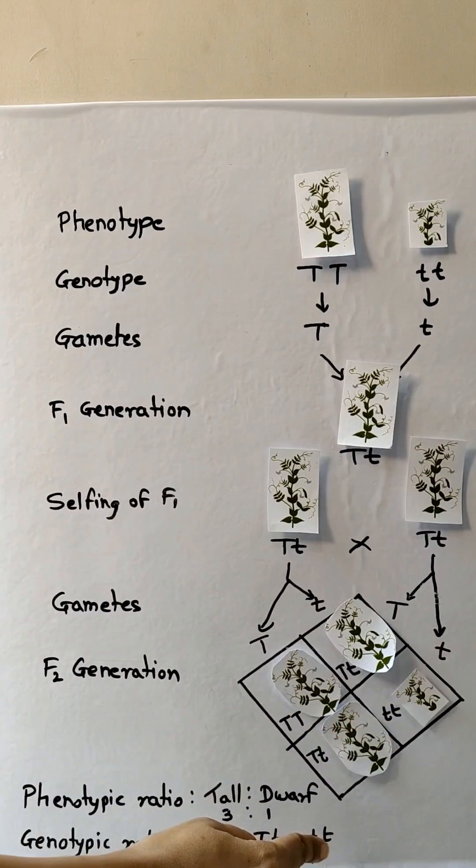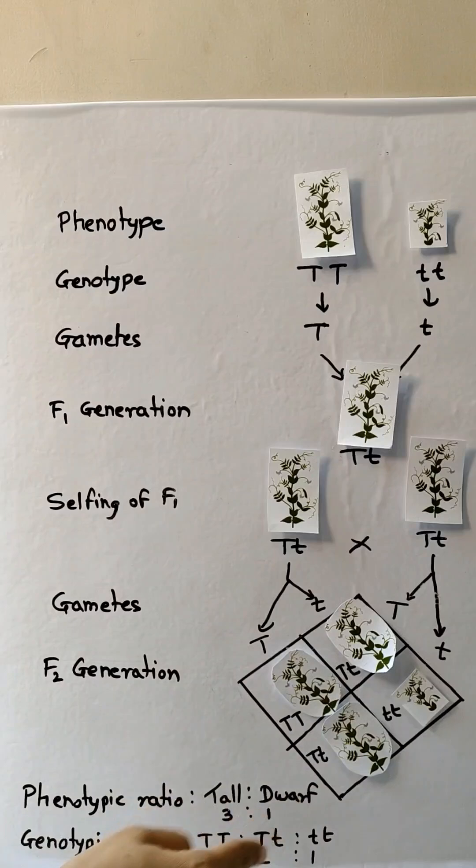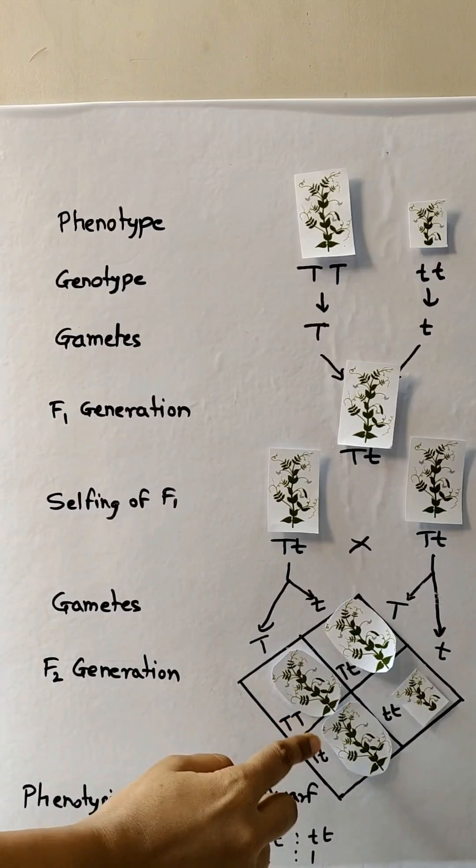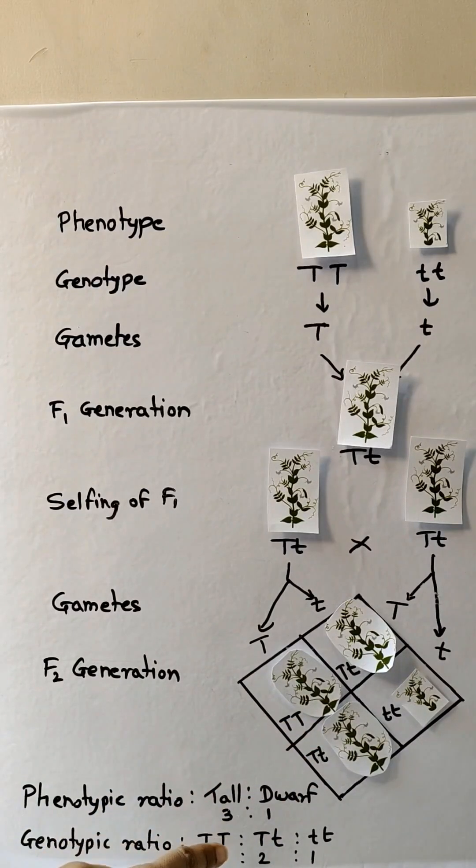And the genotypic ratio, you can see small t small t, and capital T small t there are two, and capital T capital T is one. That is the genotypic ratio is one is to two is to one.